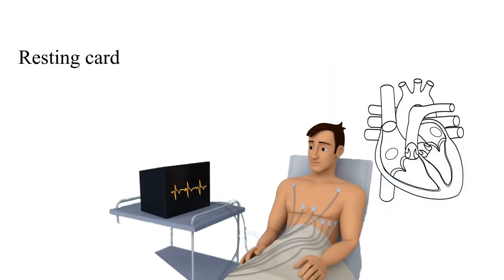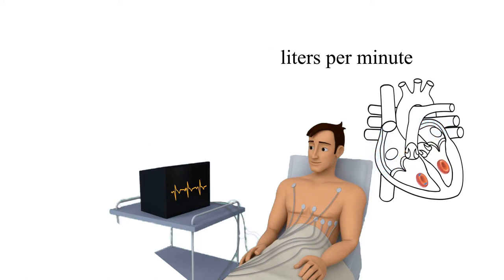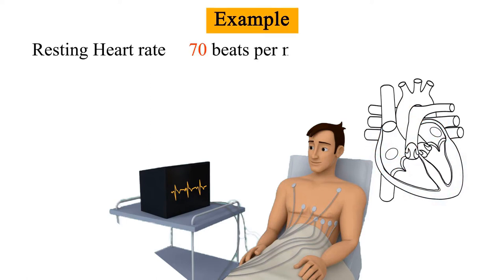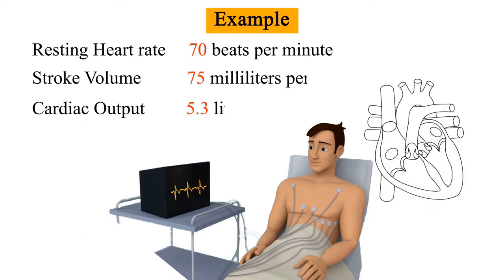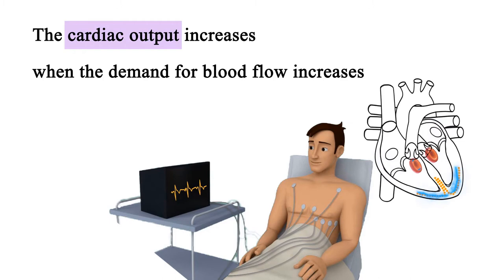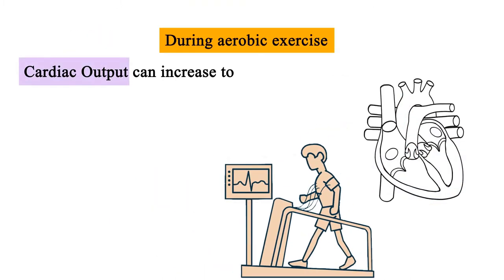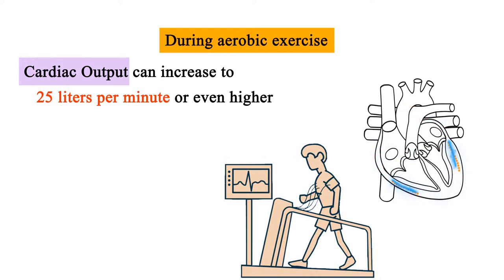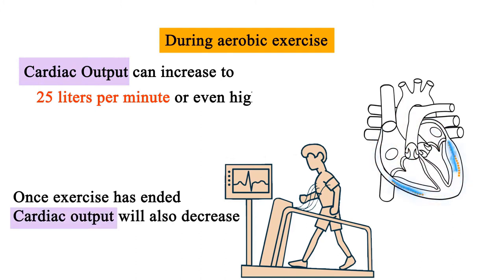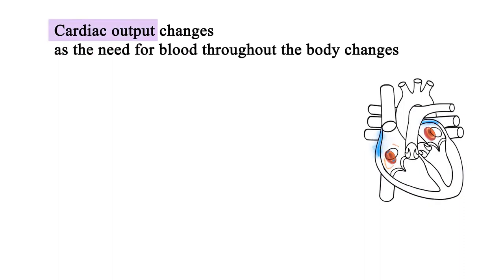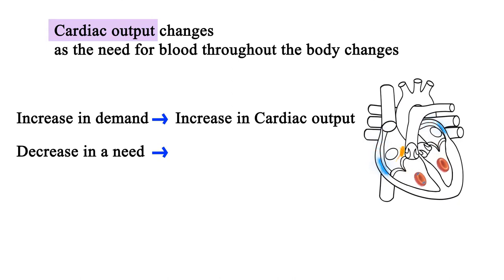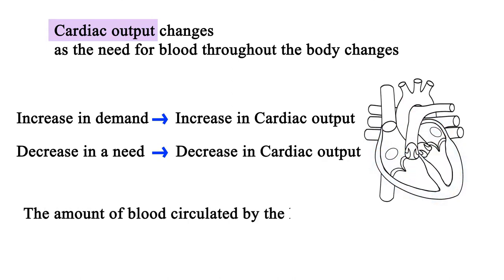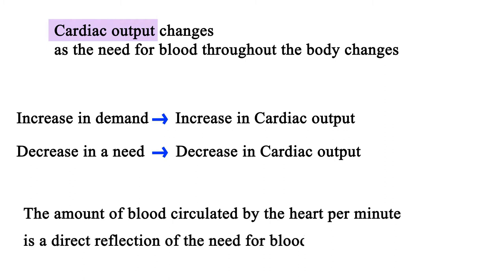For a healthy adult, resting cardiac output is approximately 5 liters per minute. For example, if resting heart rate is 70 beats per minute and stroke volume is 75 milliliters per beat, cardiac output is 5.3 liters per minute. Cardiac output increases when demand for blood flow increases — during aerobic exercise it can reach 25 liters per minute or higher. Once exercise ends and demand decreases, cardiac output decreases accordingly. The amount of blood circulated per minute is a direct reflection of the body's need for blood at that time.